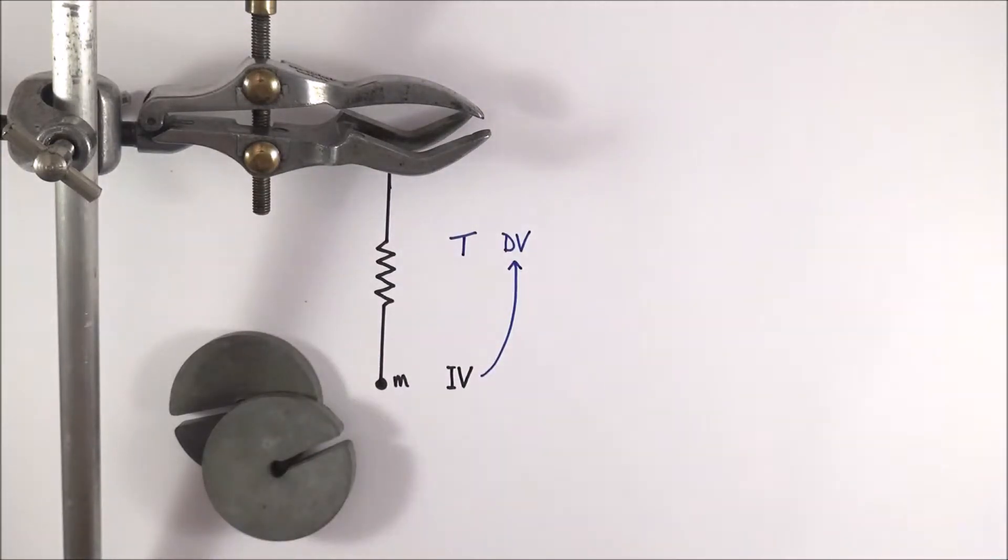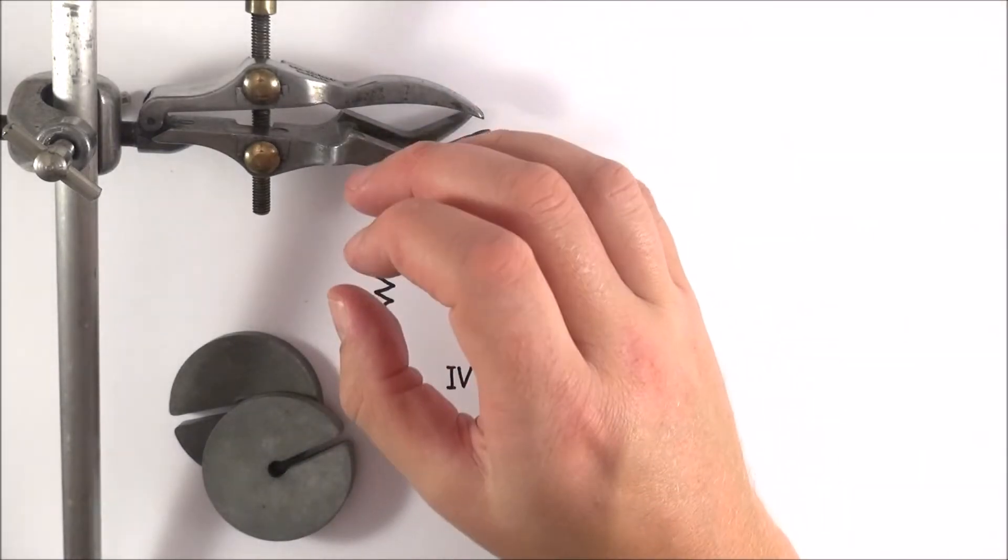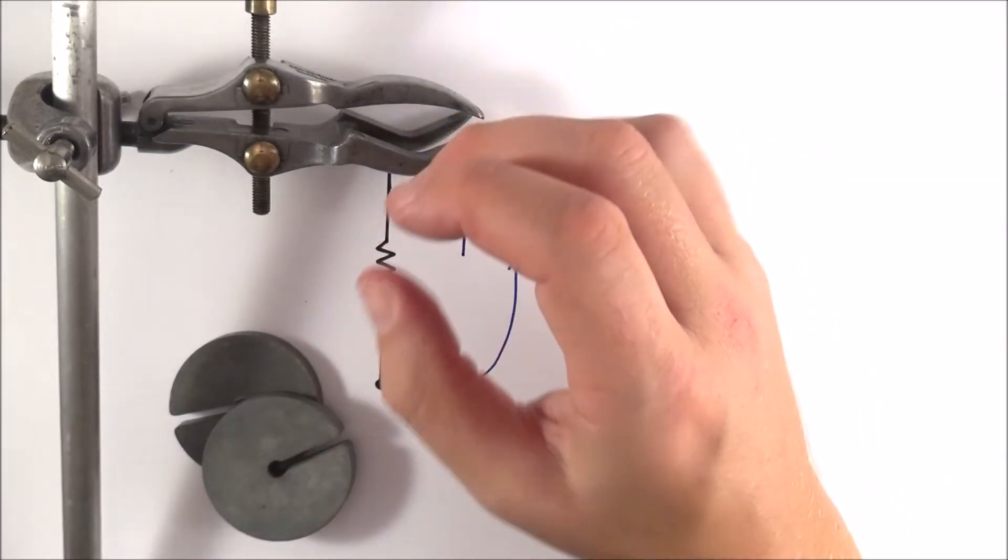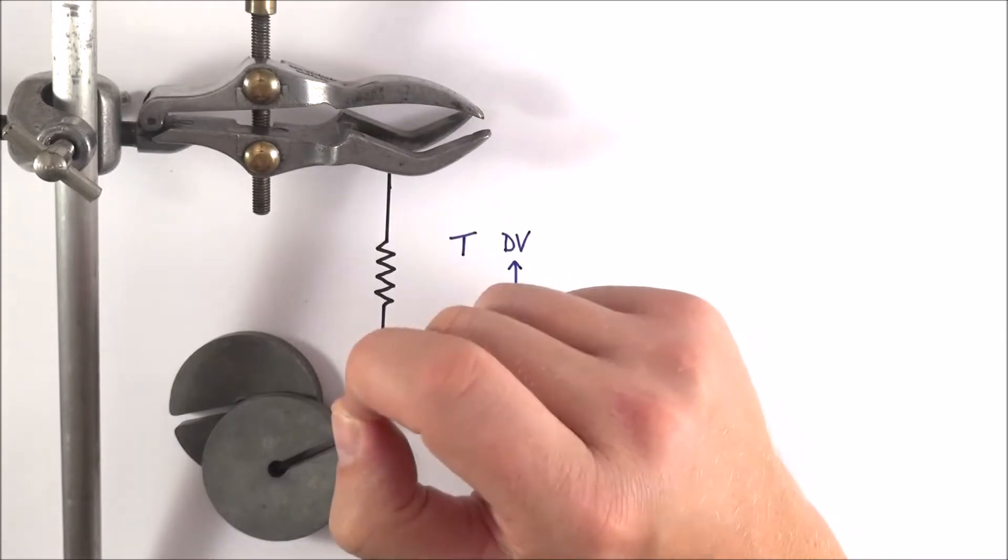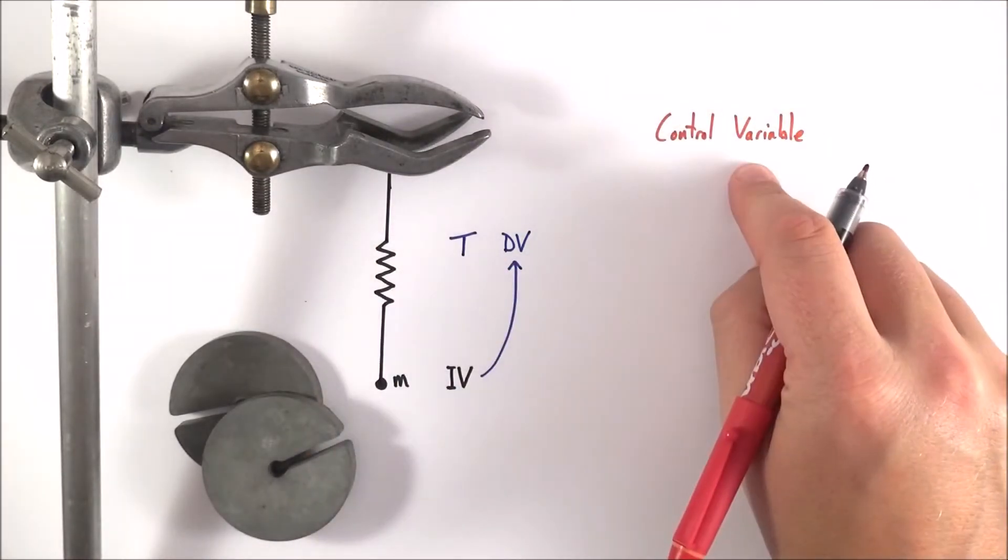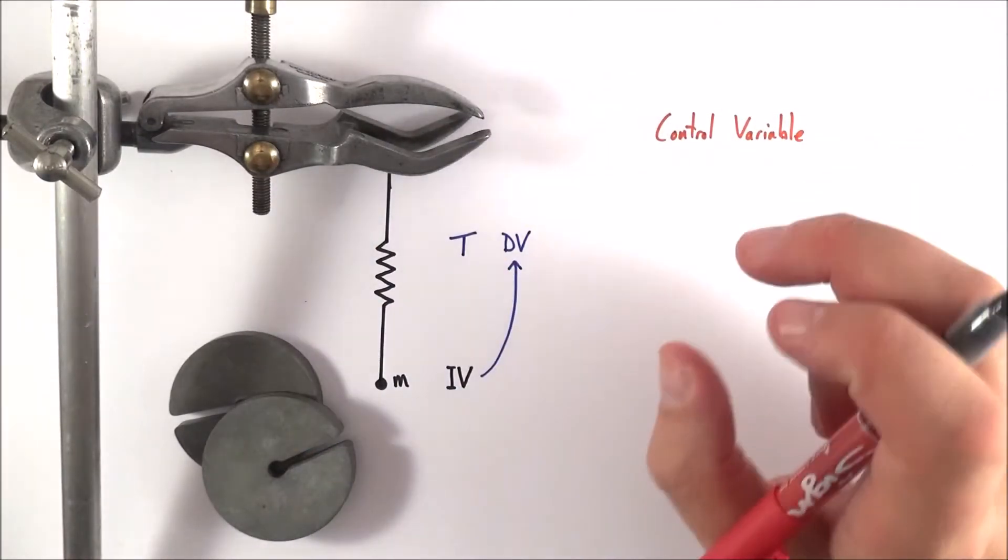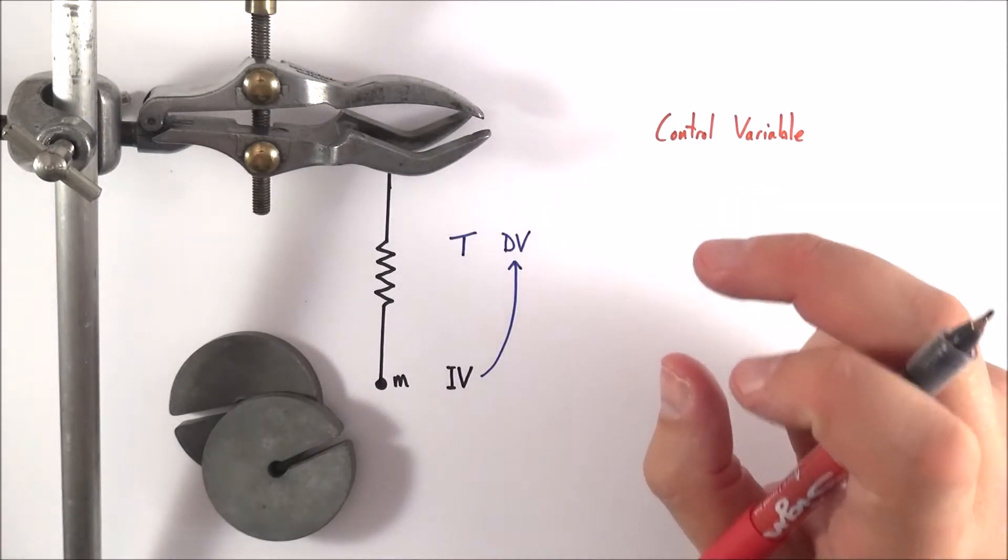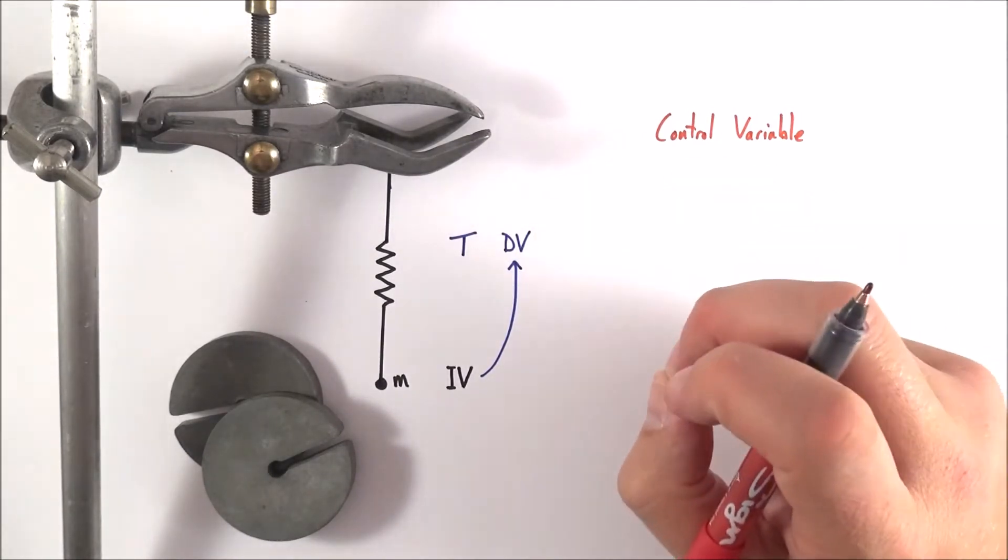And in order to do that what we need to think about are controlling certain parts of our experiment. And we do that by controlling these control variables. So what is a control variable? Well it's basically a quantity that could vary but we deliberately keep it constant to make sure that we have this fair test.